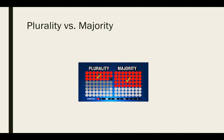If you look at the other four candidates, a majority of people don't want candidate A. But those people divided their votes between B, C, D, and E. So a plurality is just the candidate who gets more votes than any of the other candidates but does not have a majority.